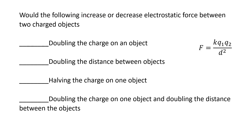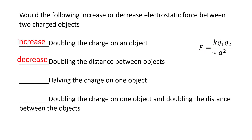Would the following increase or decrease the electrostatic force between charges? If we doubled the charge in one object, it's going to increase, because if that number goes up, the force goes up. Double the distance between the objects — double the thing on the bottom — and that force is actually going to go down, and at an increased rate because it's squared.